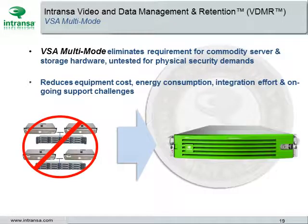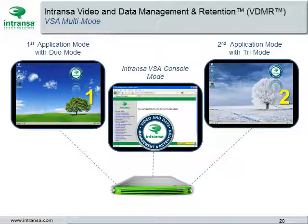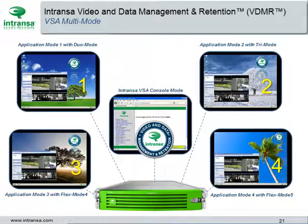VSA Multi-Mode eliminates the requirement for commodity server and storage hardware, all of which is untested for physical security demands, reducing equipment cost, energy consumption, and integration and support challenges. A dual-mode appliance provides an Intransa VSA console mode for server storage operations, as well as an application mode for a VMS, access control, or analytics application. A tri-mode appliance adds a second application slot. Multi-mode also offers Flex Mode 4 and Flex Mode 5 to eliminate three or four commodity server and storage systems, replacing them with a single appliance.